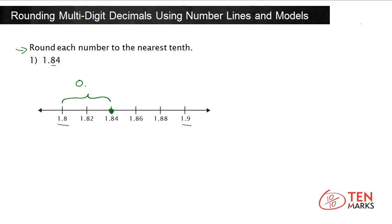There are only 4 hundredths between 1 and 8 tenths and 1 and 84 hundredths. But there are 6 hundredths to 1 and 9 tenths. 1 and 84 hundredths rounds down to 1 and 8 tenths, to the nearest tenths. Let's solve another problem.